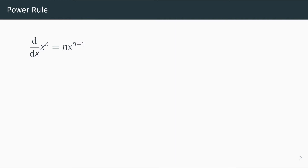So for example, the derivative of x to the power of 5 is equal to: bring the power to the front, so bring 5 to the front, and subtract 1 from the power, so from x to the power of 5 you end up with x to the power of 4. So the derivative of x to the power of 5 is 5 times x to the power of 4.